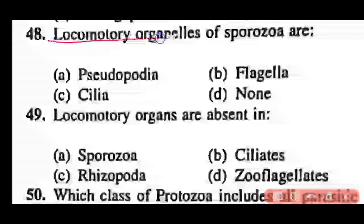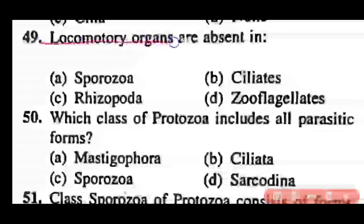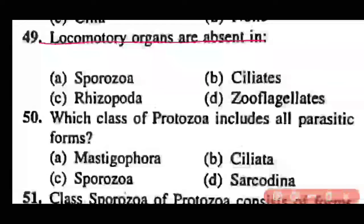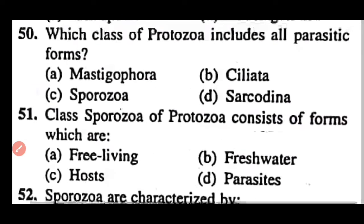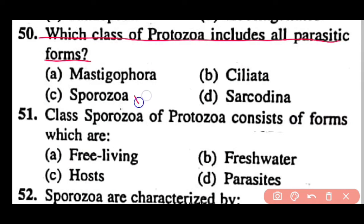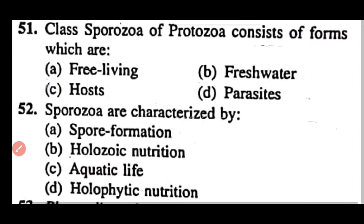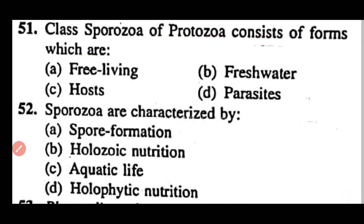Question 48: The locomotory organelle of Sporozoans are pseudopodia, flagella, cilia, or none of these? Correct answer is option D. Sporozoans have no locomotory organelle because they are all parasitic life forms. Question 49: Locomotory organs are absent in Sporozoans, Ciliates, Rhizopods, or Zooflagellates? Correct answer is option A. Question 50: Which class includes all parasitic forms — Mastigophora, Ciliates, Sporozoa, or Sarcodina? Correct answer is option C. Sporozoa includes all parasitic forms such as Plasmodium. Question 51: Sporozoa consists of host parasites (option D).